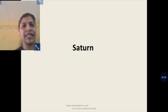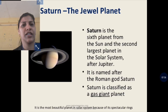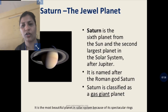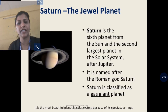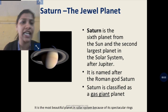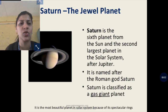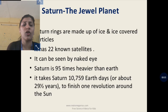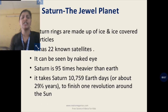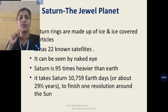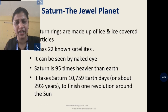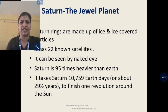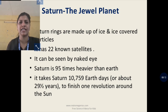Saturn is the sixth planet from the sun and the second largest planet in the solar system. It is also called a gas giant. Its density is very low — so low that it can float on the sea.